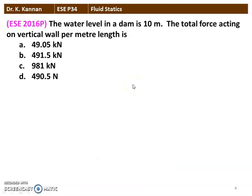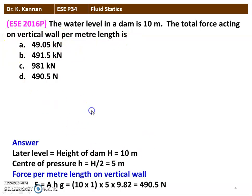The next question from the 2016 question paper: the water level in a dam is 10 meters; the total force acting on the vertical wall per meter length is to be found. We calculate the total force: F = area × center of pressure × g = 10×1×5×9.81 = 490.5 kN. The answer is option D, 490.5 kN.